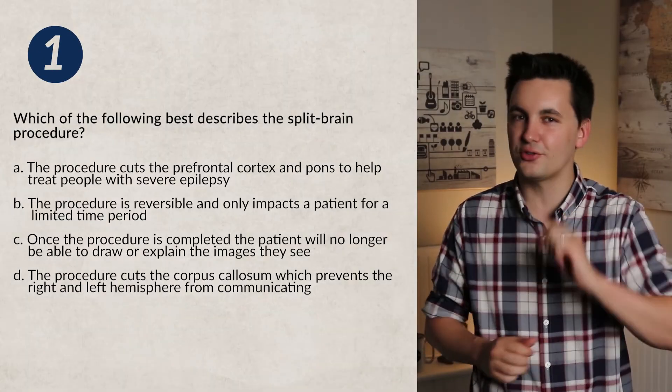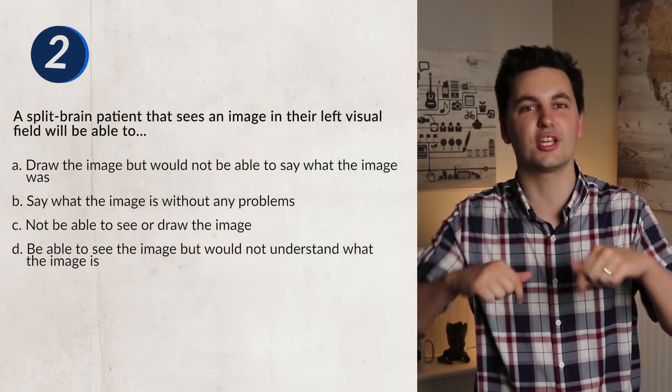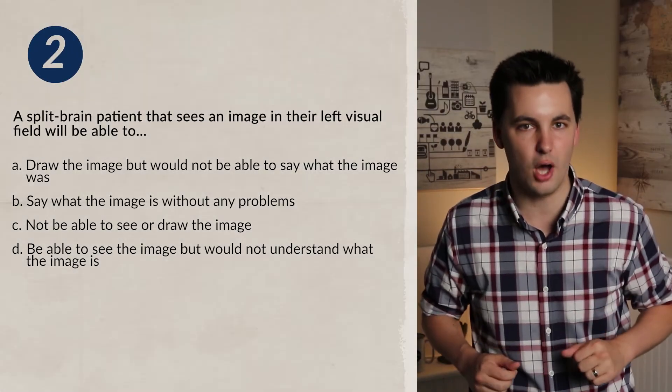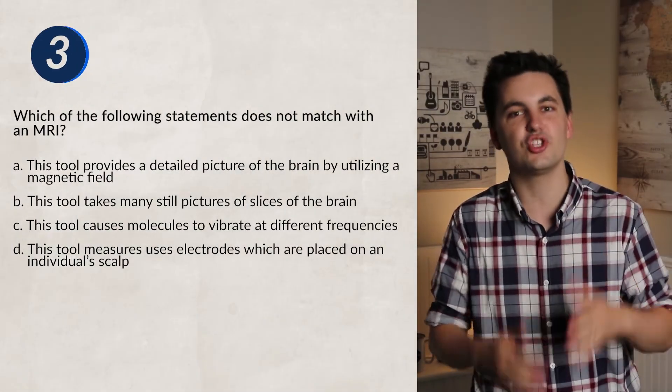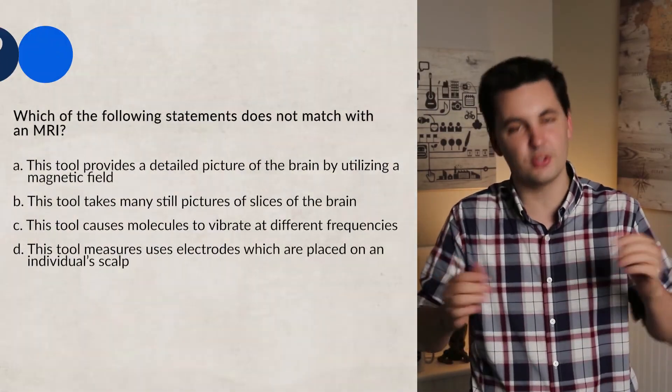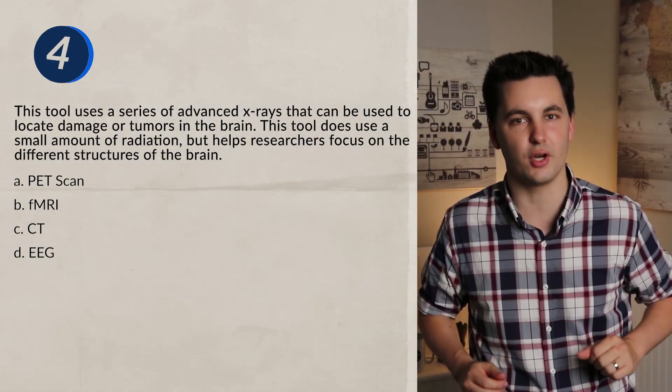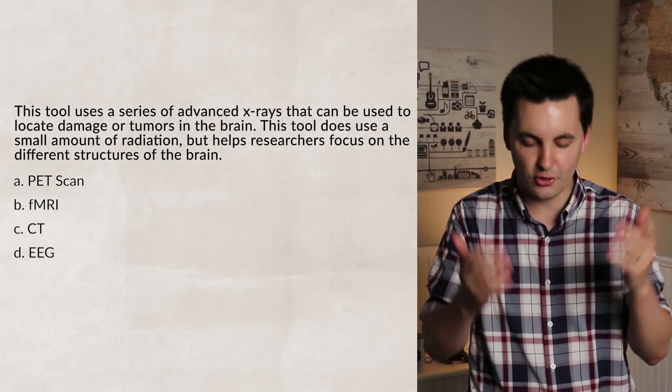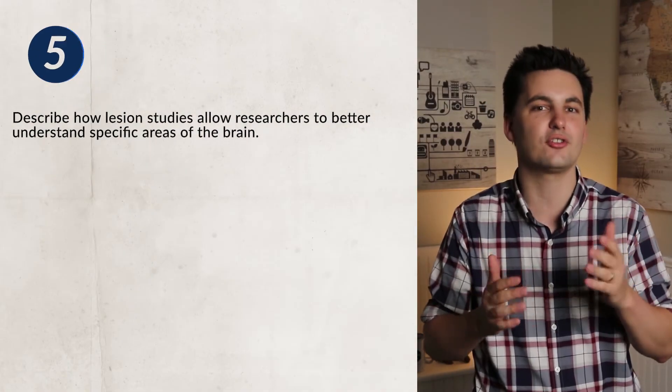All these different tools and methods for examining the brain allow us to understand the different structures and functions of the brain. Next time we'll be going into the adaptable brain with unit 2 topic 8. Before you watch those videos, answer the questions on the screen and check your answers in the comments section below. Don't forget to hit that subscribe button, check out the Ultimate Review Packet and the Mr. Sinn Discord server — all of these will help you get an A in your class and a 5 on that national exam.